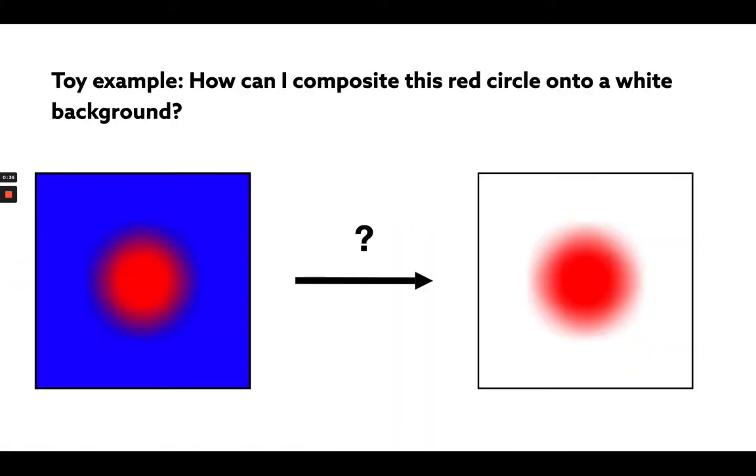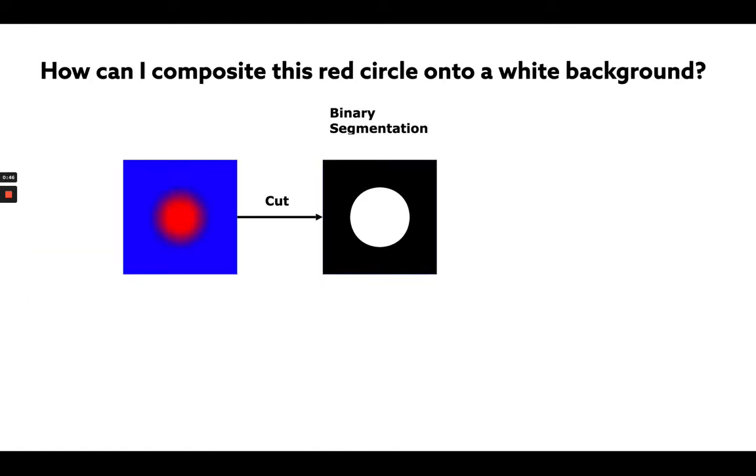So I want to start with a toy example. How are we going to take this red circle off the blue background and put it onto a nice white background? Seems very basic, but it's actually not often approached in the right way.